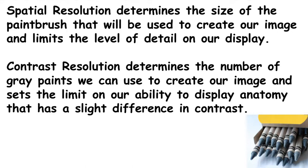This is where film still beats digital systems. Film screen systems can achieve 10 to 12 line pairs per millimeter, while digital systems are only about 8 to 10 line pairs per millimeter. But contrast resolution — which determines the number of gray shades we can resolve — is where digital really excels. It can detect a contrast difference as small as 1%, while film screen could only see about a 10% difference in contrast, meaning digital can distinguish subtle differences like fatty livers versus healthy livers.